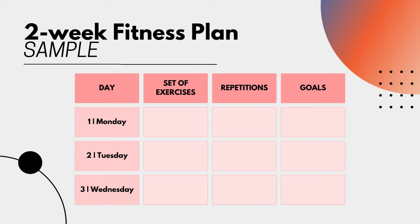For the second column, we have the set of exercises. Take note — each day, you need to list five exercises. For example, we have burpees, planking, push-ups, wall seat, and jumping jacks. And then for the third column, we have the repetition — you have to decide for each exercise how long or how many times. For example, in burpees, you have 20 times, or in a wall seat, at least one minute.